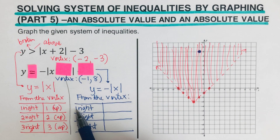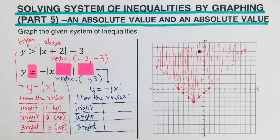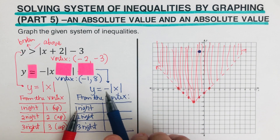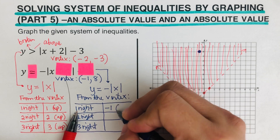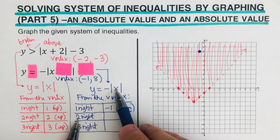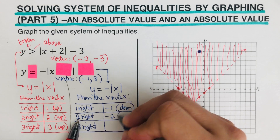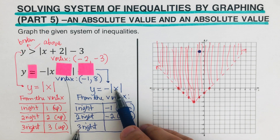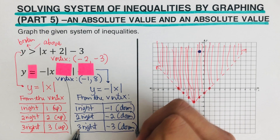We plug one, two, and three into x. The absolute value of one is one, but there's a negative in front, so it becomes negative one — we go down. The absolute value of two is two; with the negative in front it becomes negative two, so we go down. Then three: with the negative in front it becomes negative three, so we go down.